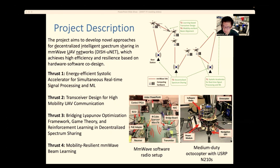We have four thrusts in this project. The first includes an energy-efficient systolic accelerator for simultaneous real-time signal processing and machine learning. The second thrust is to design a transceiver for high-mobility UAV networks, using a new physical layer modulation scheme called OTFS.